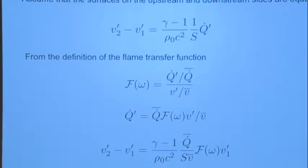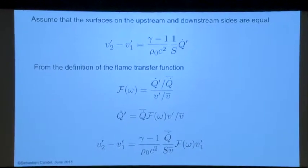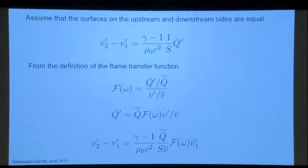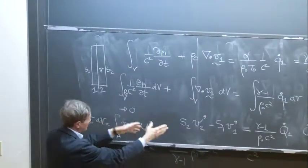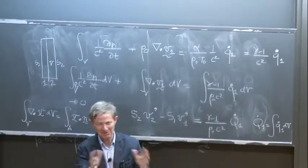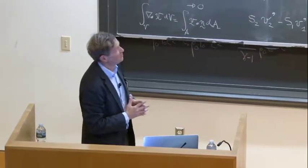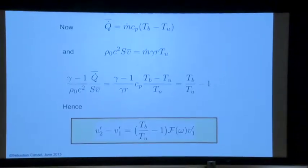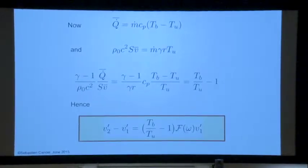This is the transfer function we introduced. You've been using transfer functions in control systems. When you study linear systems, this is a typical tool for engineering. We write Q̇' — the 1 is replaced by a prime. Sometimes it's 1 and sometimes it's prime because here 1 is the upstream and 2 is downstream. There are no ambiguities. You see this expression, and now if you look carefully at the right-hand side, it can be made more explicit.